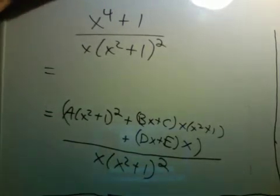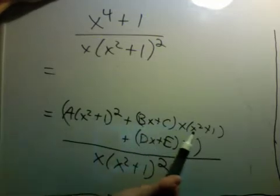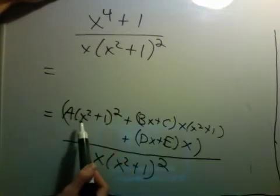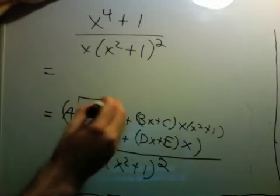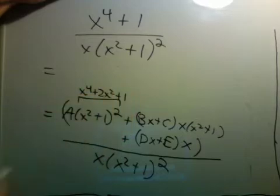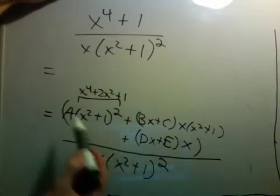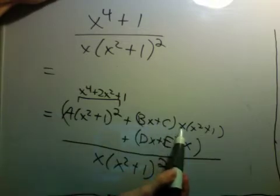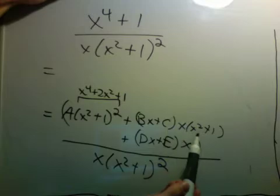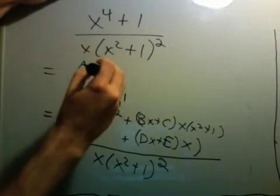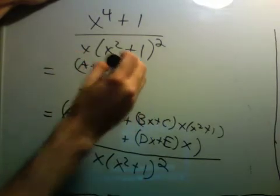All of this gets divided by x times x squared plus 1 squared. So now we need to add together everything on top. The highest degree that appears here is x to the fourth. So if I expand this, I'll get an x to the fourth. I'll have A times x to the fourth, and over here I have Bx, x, x squared, so that's another x to the fourth. So I'll have A plus B, x to the fourth.